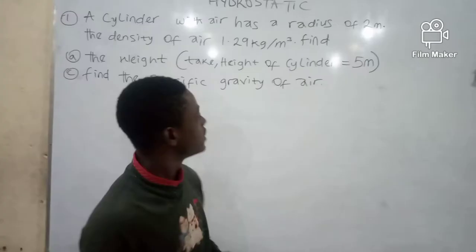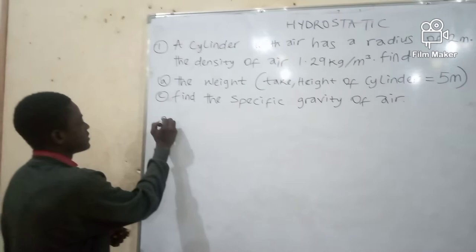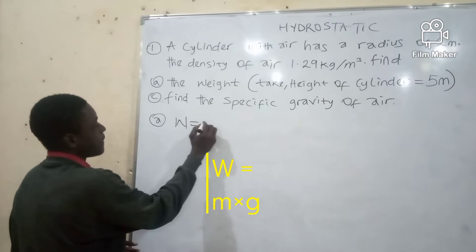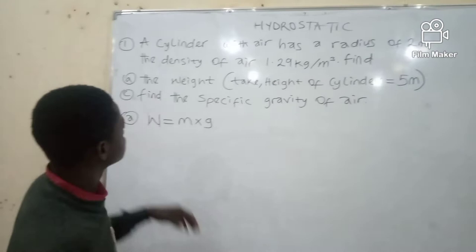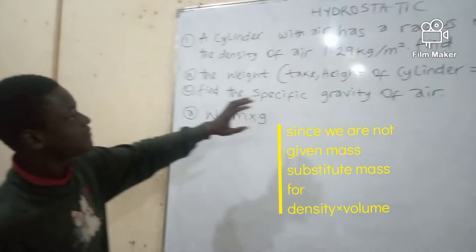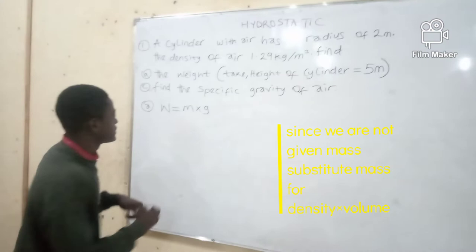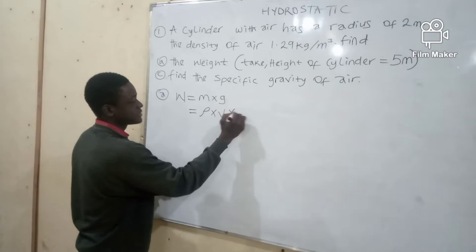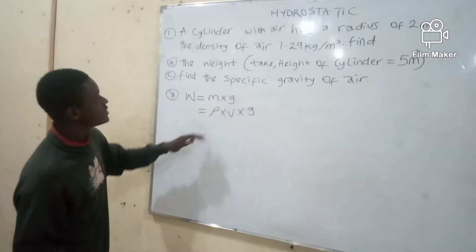Now there are some formulas we will be using today. To solve the first part of our question, we have to find the weight. Our formula for weight is equal to mass times gravity. But if we check our question, we have to use the values we are given. We all know gravity to be 9.81. But since we don't have the value for mass yet, we are going to substitute mass with density times volume, then multiply by gravity, because mass equals density times volume.